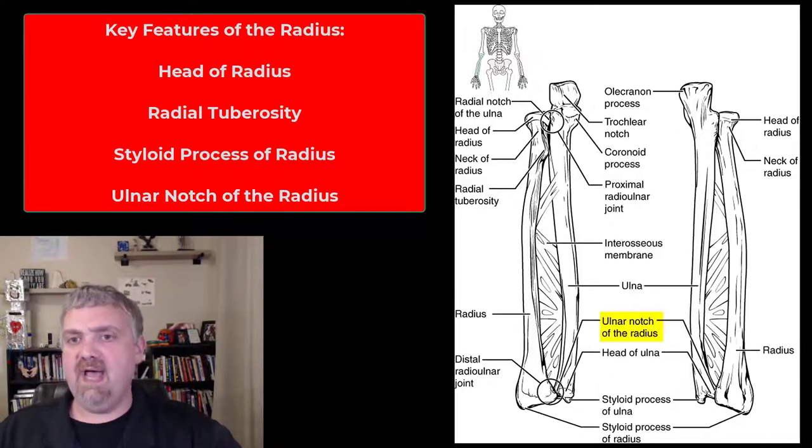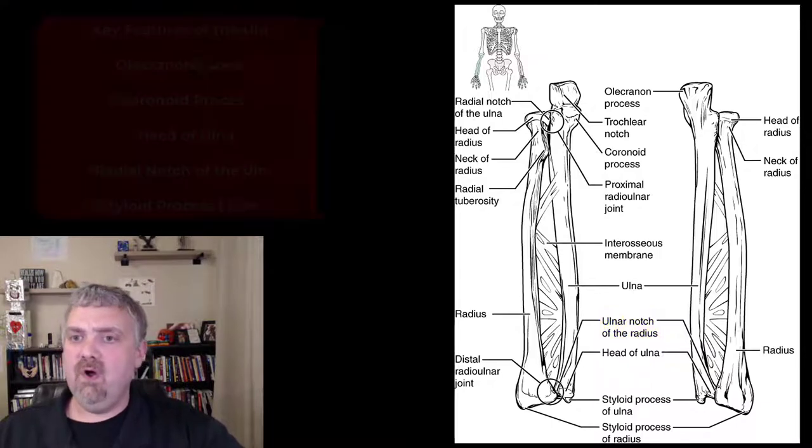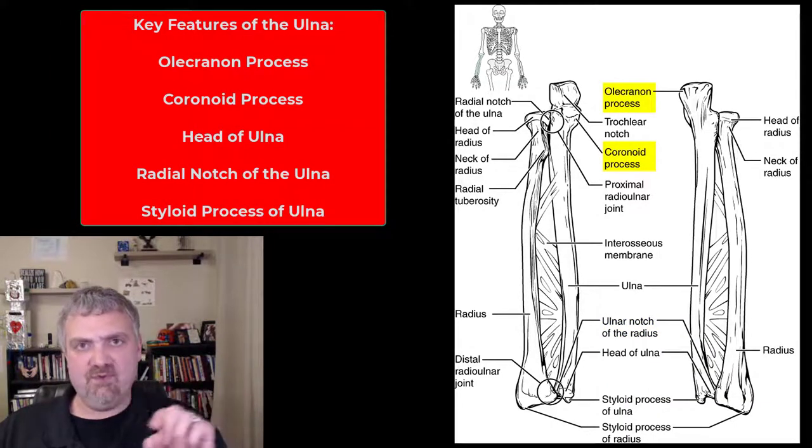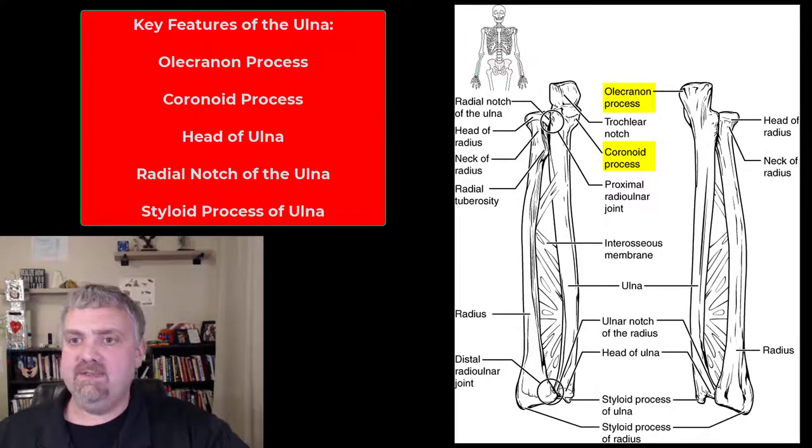We also do have the ulnar notch of the radius where the radius and ulna come together proximally. The ulna, you have that olecranon process and coronoid process forming that trochlear notch that does look like a U. I already said olecranon and coronoid process, they fit into the olecranon and coronoid fossa of the humerus. We have the head of the ulna there.